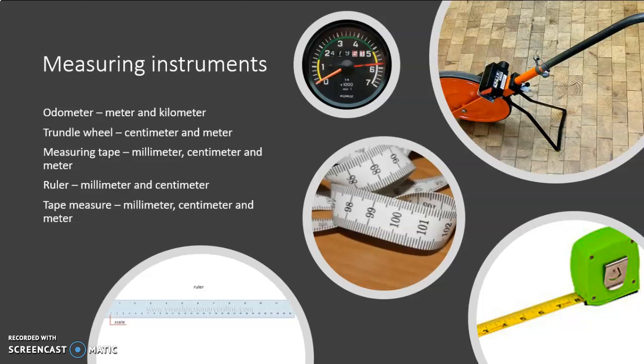When we look at measuring instruments, first we have the odometer. It is in meters and then it goes over to kilometers. As soon as you've driven a thousand meters it goes over to kilometers. In certain countries this is in mileage, but in South Africa and certain other countries it is measured in kilometers.